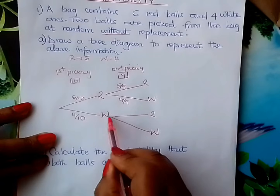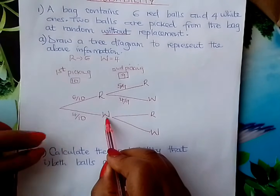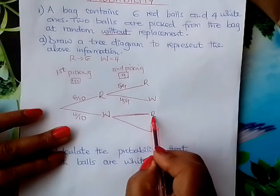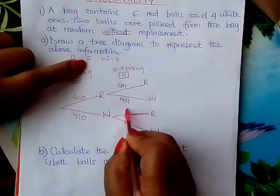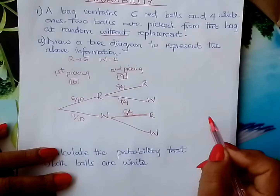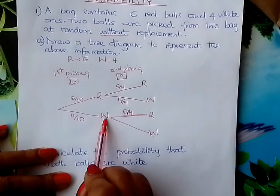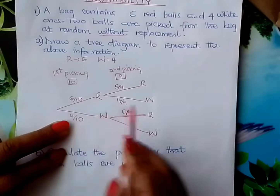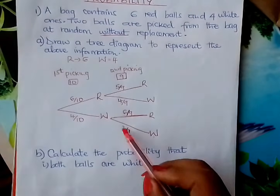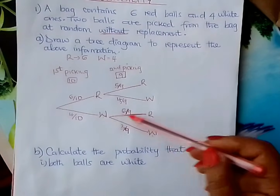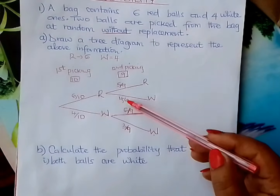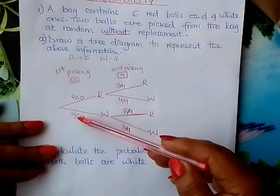If you had picked a white ball, what is the probability of picking a red in the second picking? The reds are still 6, so it is 6 out of 9. What is the probability of picking a white if you had picked a white first? The white balls were 4, so now they are 3 — the probability is 3 over 9. Note that each pair of branches should add up to 1, which you can use to check your work.